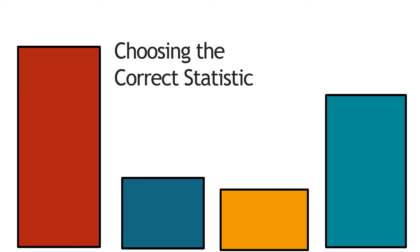Hello everyone. In this video we're going to talk about how do you know which statistic to use in different research situations. This is a really important and difficult skill. When you're taking your statistics course, you can tell based on the chapter which statistic you should use. But once you leave the class, that's not how it's going to work. You'll collect data or plan a study and you have to know ahead of time how you're going to analyze that data without knowing which chapter in the book is appropriate.